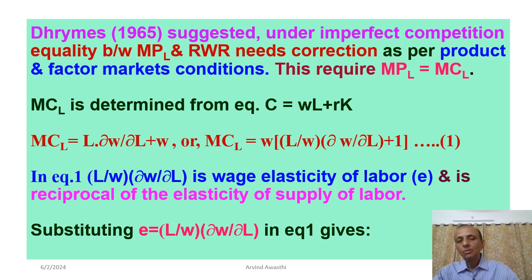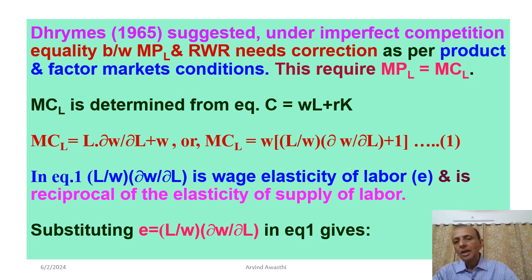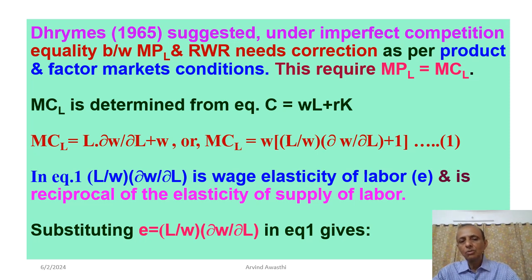Marginal cost निकालेंगे cost equation से, जिसे यहां लिख रखा है: C equal to WL plus RK. W wage rate per worker है, L quantity of labor है, R price per unit of capital है — rental value — और K total amount of capital है। इसको differentiate करेंगे delta C by delta L के respect में, तो marginal cost of labor left hand side में आएगा, delta C by delta L, जो यहां MCL है।